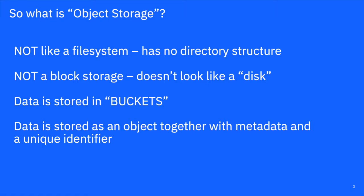So what does object storage look like? It really looks like a series of buckets or containers — buckets is the term that we tend to use here. Files are put into buckets in a variety of different ways. The data is stored as an object together with metadata and a unique identifier, which allows people to search object storage and find files to do things with them at a later stage.